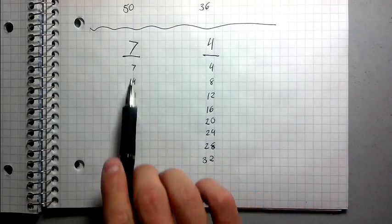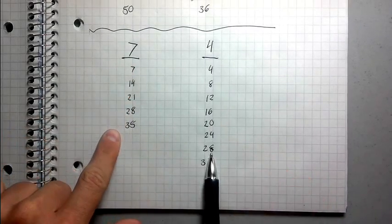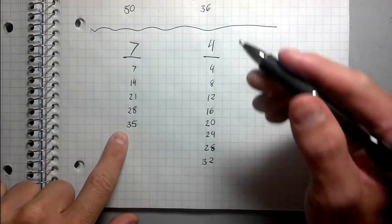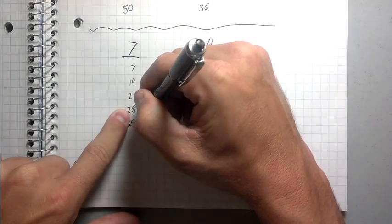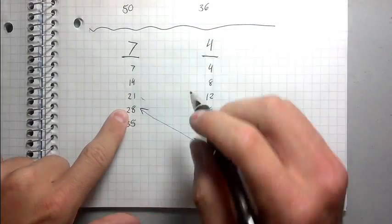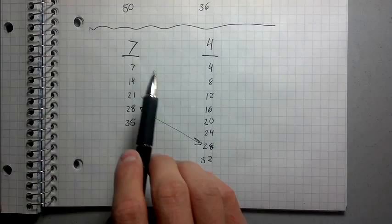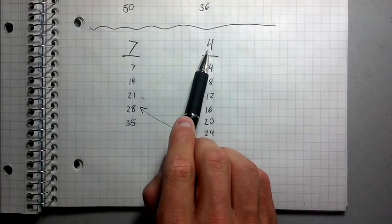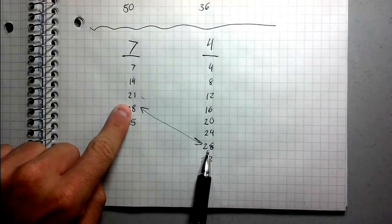So we're going to do the same thing here. Let's look for the smallest number that both of these columns of numbers have in common. Well, it'd be 28, right? Wouldn't it? There you go. Now notice something. See, if I just would have gone 7 times 4, I would have gotten 28.